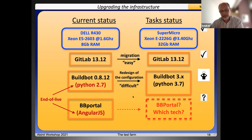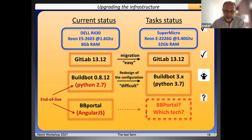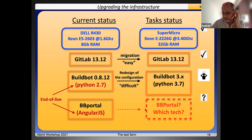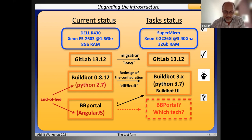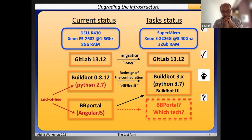Concerning the BB Portal, we are also confronted with the end of life of AngularJS. The new Angular is not compatible with AngularJS. Therefore, it will be important to evaluate some recent JavaScript frameworks like Node, Vue, React, and so on before deciding to switch to Angular, because it's not so easy. Perhaps we can also move to Python frameworks like Flask or Django. On the other hand, Buildbot version 3 offers a basic user interface better than the old one, but less complete than the current BB Portal. The evaluation of different web technologies is still in progress.